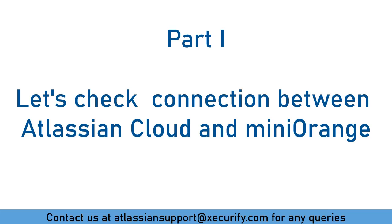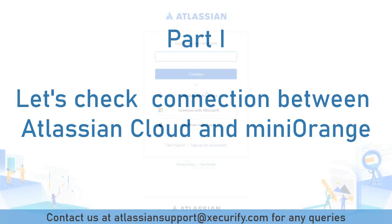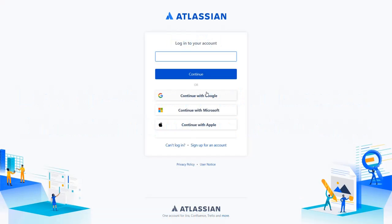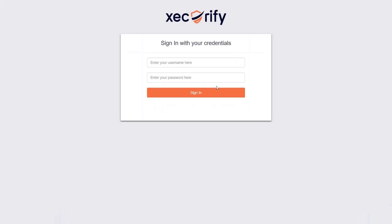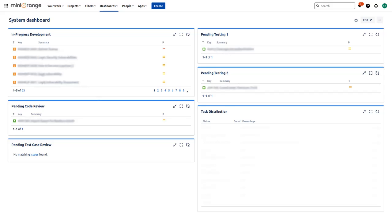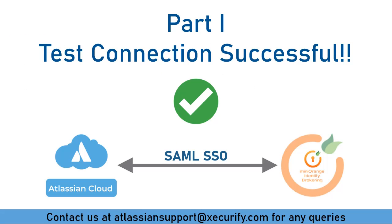Let's check the connection between Atlassian Cloud and MiniRange. In the Atlassian Cloud login page, enter the user email ID and proceed. The user will be redirected to the MiniRange login page for SAML authentication. Login with MiniRange IDP credentials. You will be successfully logged in to the Atlassian Cloud app using MiniRange credentials. Hence, the test connection between Atlassian Cloud as SP and MiniRange as IDP is successful.